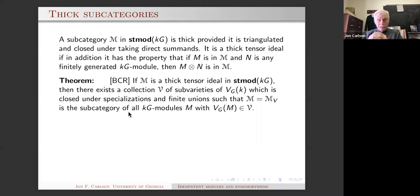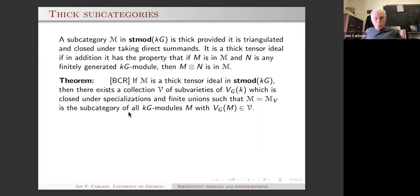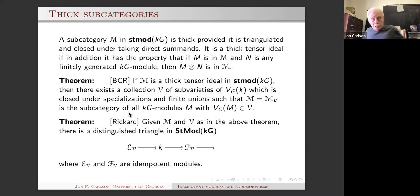The classification says that thick tensor ideals in the stable category of a group algebra correspond to collections of subvarieties of V_G(k) closed under specialization and finite union. An object is in the subcategory if and only if its support variety is contained in that subset.